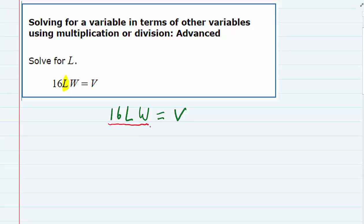Now since I want to get rid of both the 16 and the W, I can divide by 16W on the left as long as I divide by 16W on the right as well. The reason I chose 16W is because I want to cancel the 16s and I want to cancel the Ws as well.